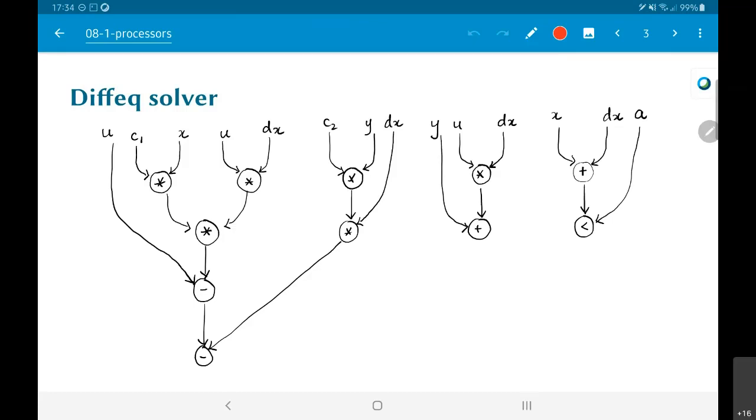So, C1 into X into U into DX is being done on the left-hand side, and U minus that, then that minus C2 into Y into DX and so on. So pretty much all the computations, I'm not going to go over that again.